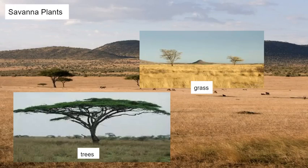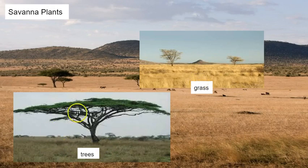Welcome back to the Savannah Part 2. We can go through these plants pretty quickly, just like we did with our temperate grassland biomes. There's not much to talk about — we're obviously going to have grass since this is a grassland, and we're going to have a few trees that pop up sporadically throughout the biome.